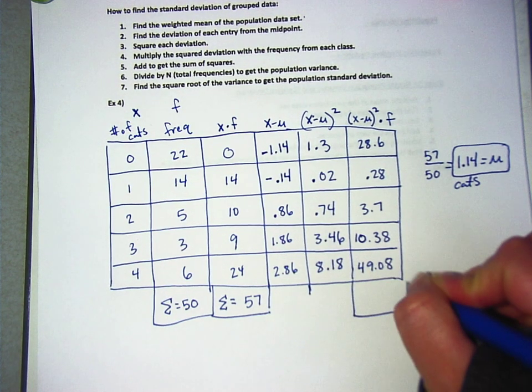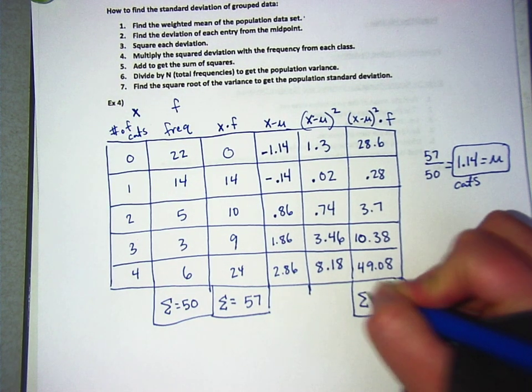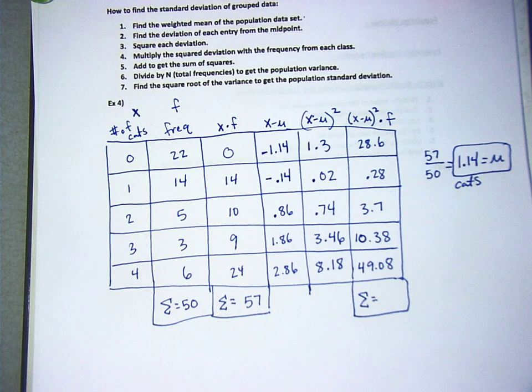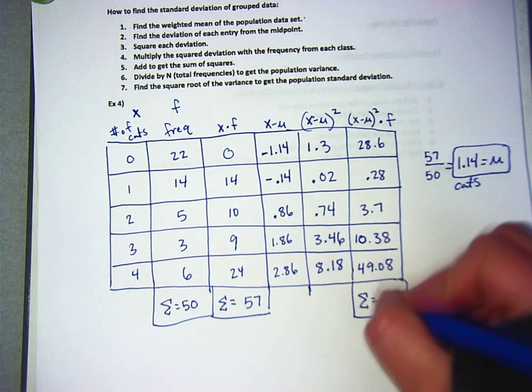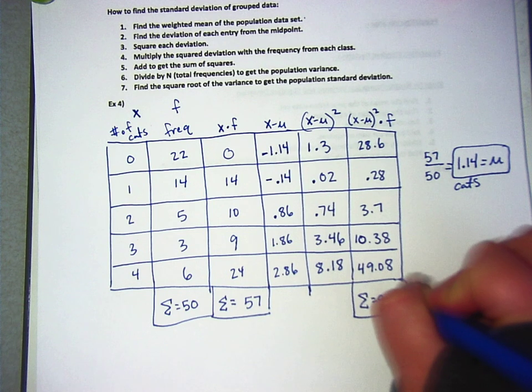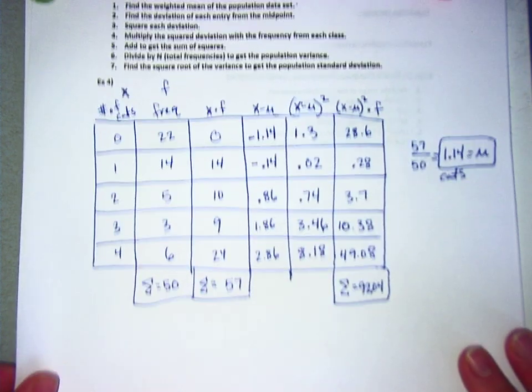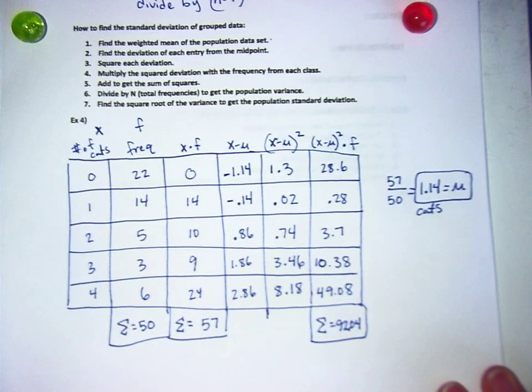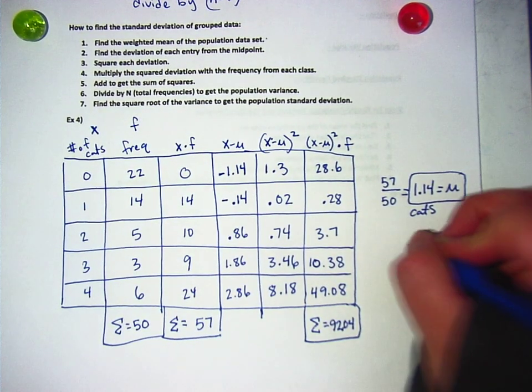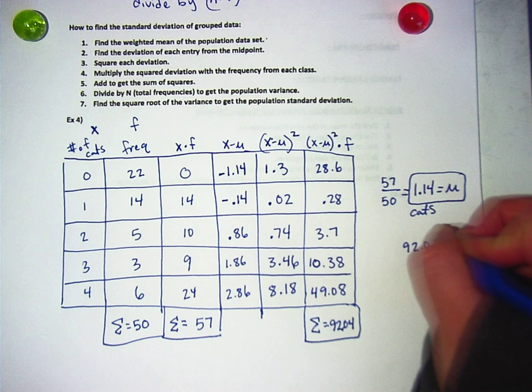And then you add these up. Okay, then what do I do with that 92.4, or 92.04?